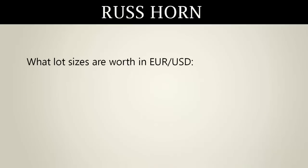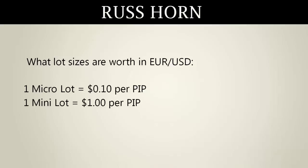What lot sizes are worth in the Euro USD: one micro lot is worth $0.10 a pip, one mini lot is worth $1 a pip, and one standard lot is worth $10 a pip.